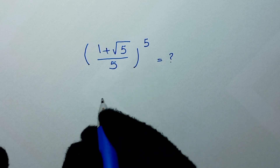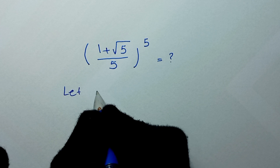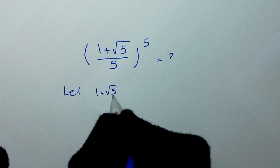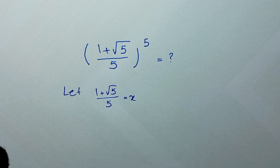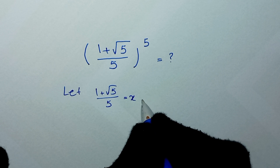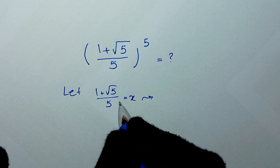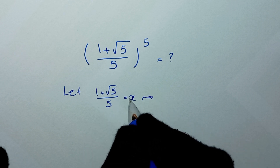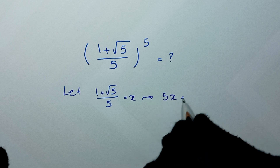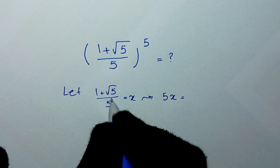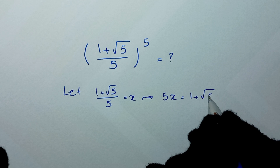In the first step, we start by letting 1 plus square root of 5 over 5 as x. From here, we multiply both sides of this equation by 5, so x becomes 5x, and this times 5 will be 1 plus square root of 5.